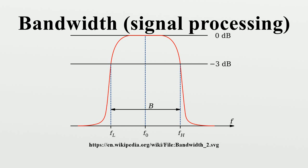Passband bandwidth is the difference between the upper and lower cutoff frequencies of, for example, a band pass filter, a communication channel, or a signal spectrum. In the case of a low pass filter or baseband signal, the bandwidth is equal to its upper cutoff frequency.